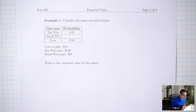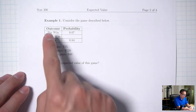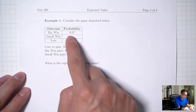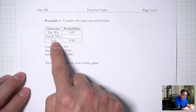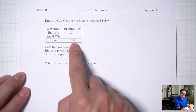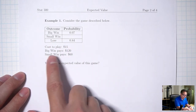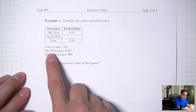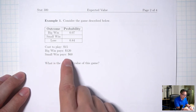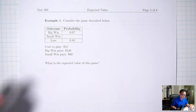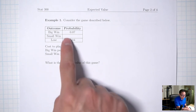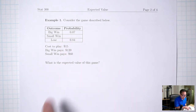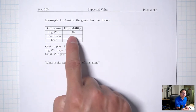Example one: consider the game described below. Big win probability 0.07, small win blank, lose 0.84. Cost of play $15, big win pays $120, small win pays $60. What is the expected value of this game? Notice there's a missing blank — the first thing we need to do is find that missing probability.